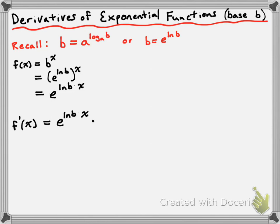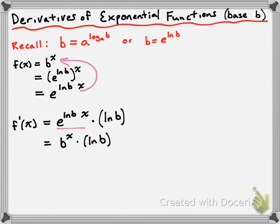So the derivative of the outer function is going to be e to the power of ln of b times x, and now we need to multiply by the derivative of the inner function to complete the chain rule. The inner function is ln of b times x. Remember that ln of b is a constant, so we just have a constant multiple of x as our inner function. The derivative of a constant multiple of x is just the constant, and in this case the constant is ln of b. So we're going to be multiplying by the ln of b. Now we're going to rewrite this in a slightly nicer format. I'll direct your attention to the factor e to the power of ln of b times x — that's exactly what we had when we rewrote f of x — and we can work backwards and rewrite it as b to the power of x.